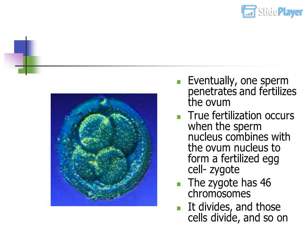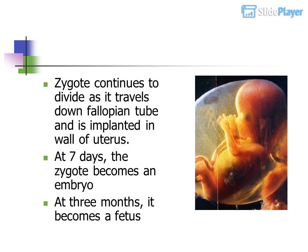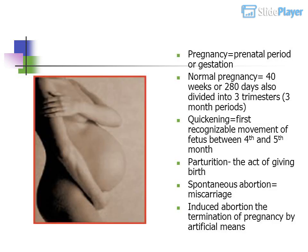The zygote has 46 chromosomes. It divides, and those cells divide, and so on. The zygote continues to divide as it travels down the fallopian tube and is implanted in the wall of the uterus. At 7 days, the zygote becomes an embryo. At 3 months, it becomes a fetus. Pregnancy equals the prenatal period, or gestation. Normal pregnancy equals 40 weeks or 280 days, divided into 3 trimesters of 3-month periods.